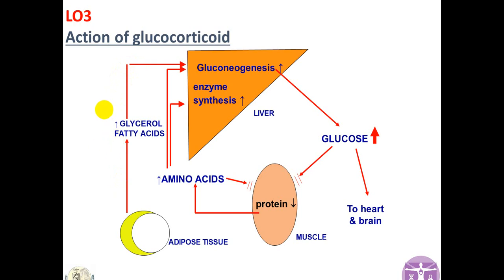In high concentrations of glucocorticoids, there is also a lipogenetic effect — lipogenesis occurs with fat accumulation in certain areas of the body, usually the abdomen and upper back. Glucocorticoids also act on muscles, resulting in breakdown of protein to produce amino acids as an energy source. This breakdown of muscle causes muscle weakness in people with high glucocorticoid levels.